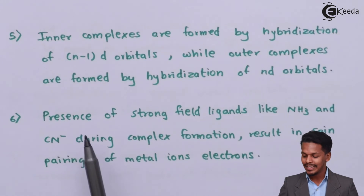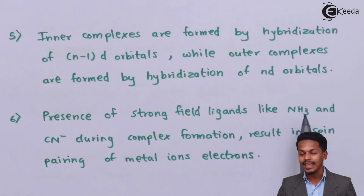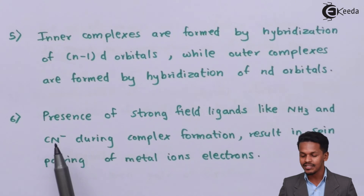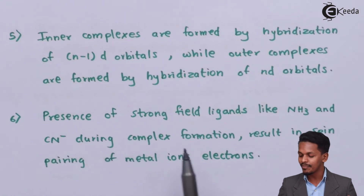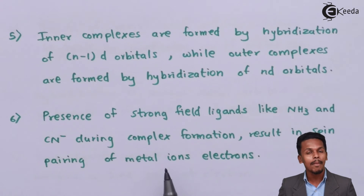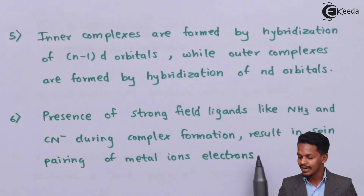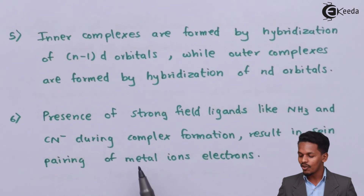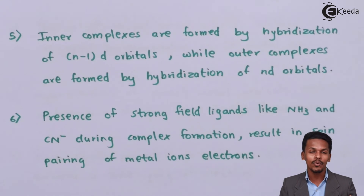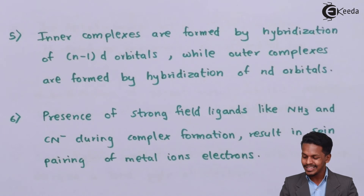The sixth point: the presence of strong field ligands such as NH₃ and CN⁻ during complex formation results in the spin pairing of the metal ion electrons. What spin pairing of metal ion electrons means will be discussed in the next topic.